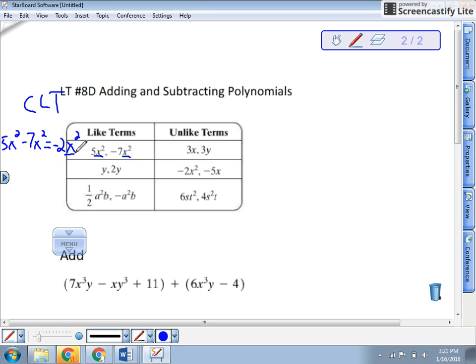Now what about unlike terms? Notice the variables or the exponents are different. So if I was going to combine 3x plus 3y, well, I can't. So that just equals 3x plus 3y. So we're adding and subtracting. The idea of combining like terms is extremely important. Notice here, they have the same variables, but the exponents are different. Exponents and variables have to be the same.